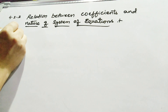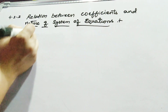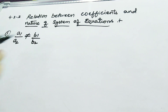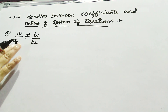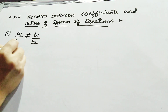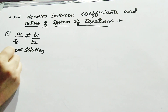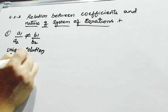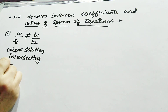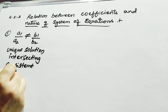Suppose the coefficient of x in the first equation is a1 and in the second is a2. If a1 upon a2 is not equal to b1 upon b2, and your equation satisfies this condition, then it is called a unique solution. It is an intersecting graph, and it is also called a consistent pair of linear equations that is independent.